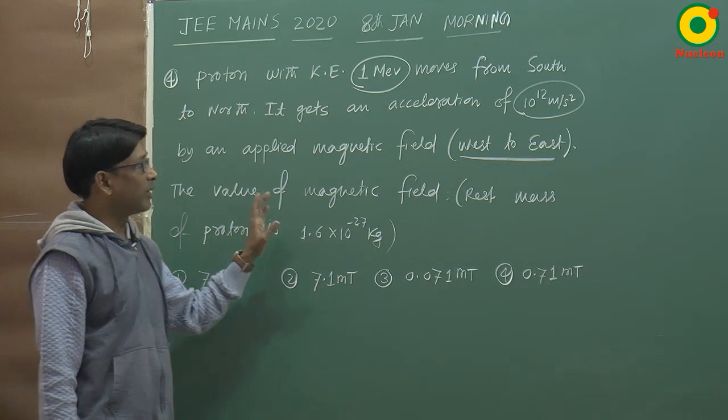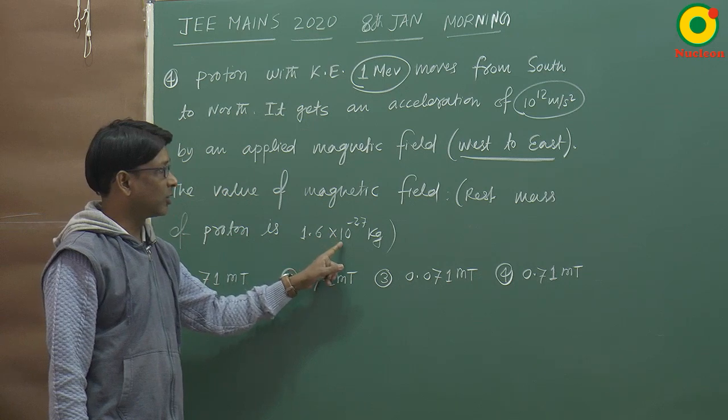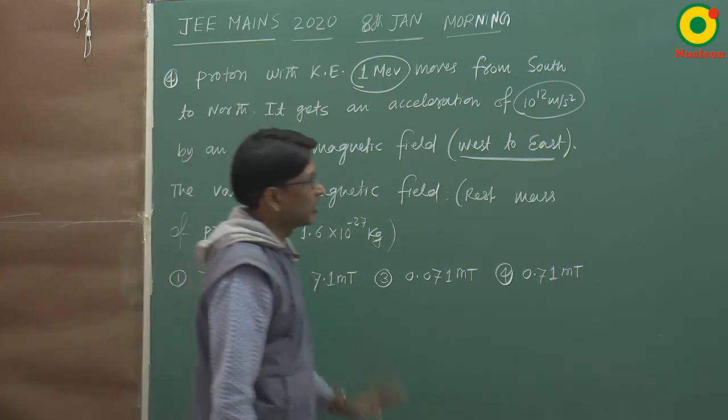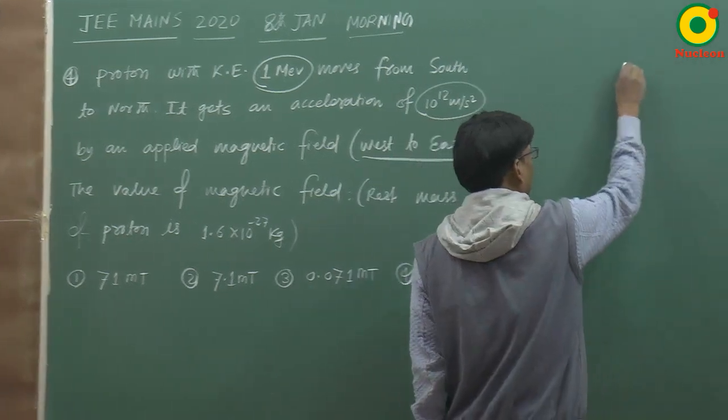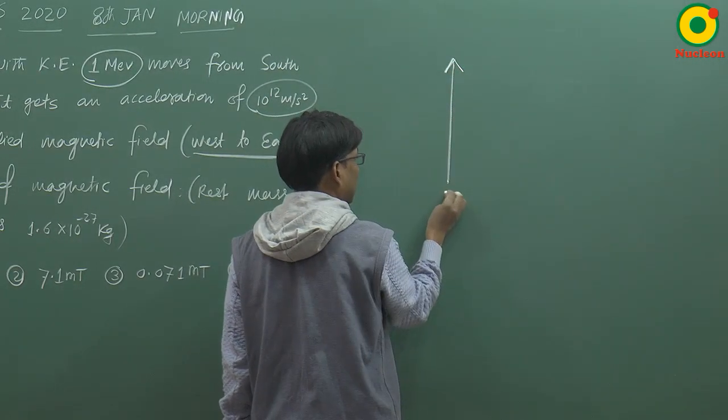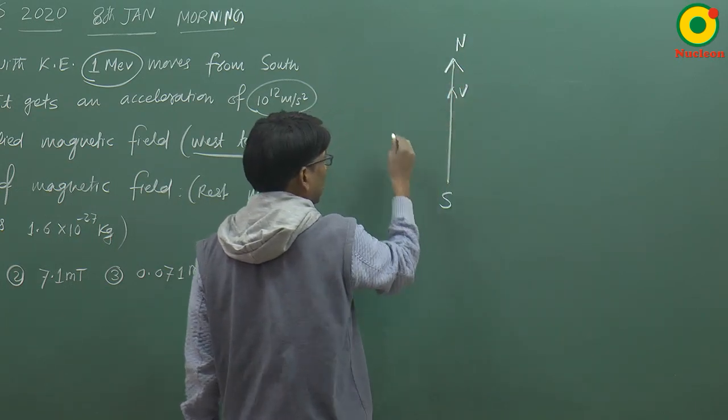The value of magnetic field if mass of proton is 1.6 into 10 power minus 27 kg. The question ka simple sa matlab ye hai ki ek proton south se north ki taraf jara hai. Yeh south hai, yeh north hai. Toh iski jo velocity hai, wo south se north ki taraf hai.